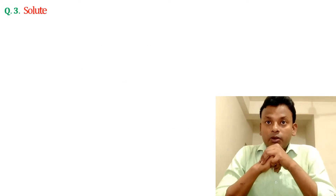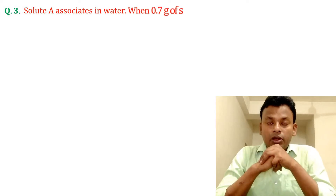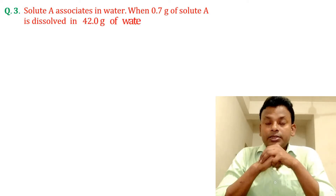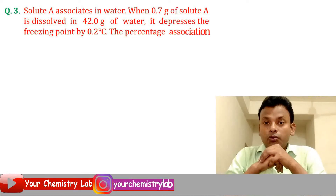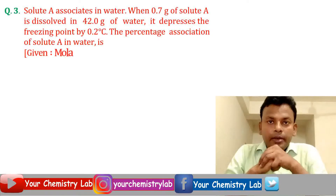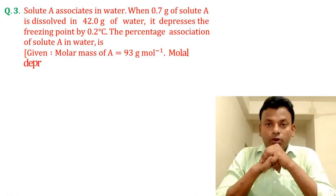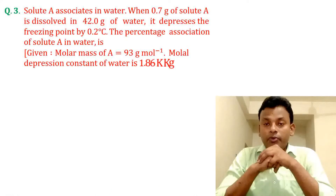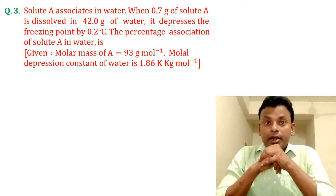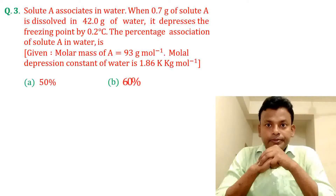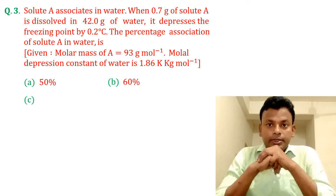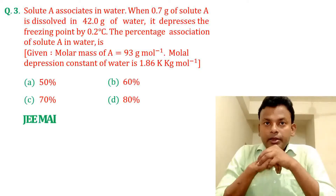Question 3: Solute A associates in water. When 0.7 gram of solute A is dissolved in 42 gram of water, it depresses the freezing point by 0.2 degrees Celsius. The percentage association of solute A in water is: given molar mass of A = 93 gram per mole, molar depression constant of water = 1.86 Kelvin·kg per mole. Options a, b, c, and d are given. This question was set in JEE Main 25th June 2022 evening shift.